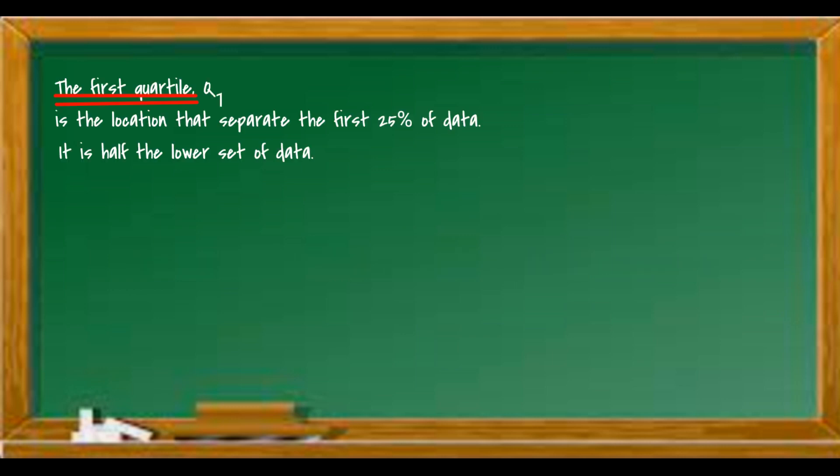The first quartile, Q1, is the location that separates the first 25% of data. It is half the lower set of data.